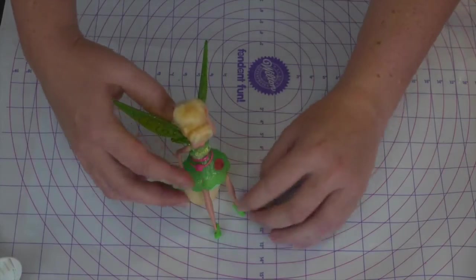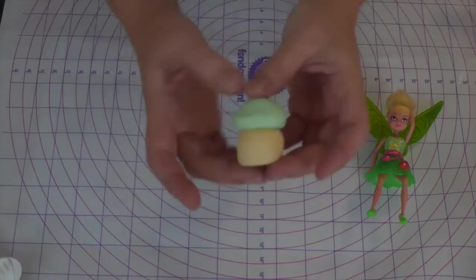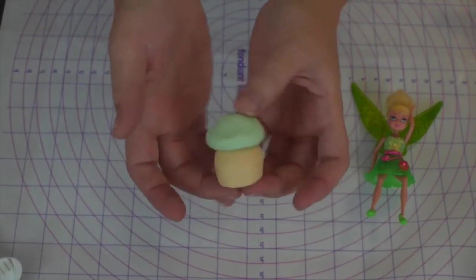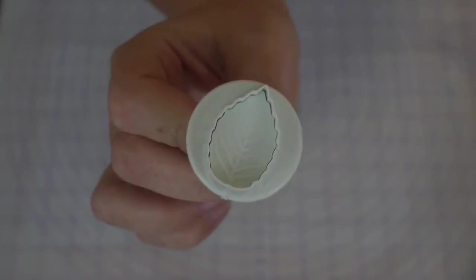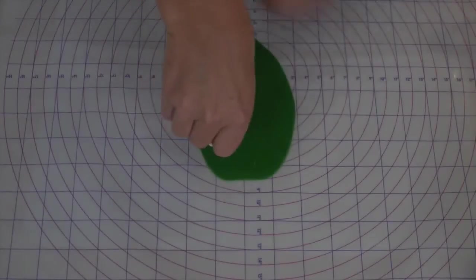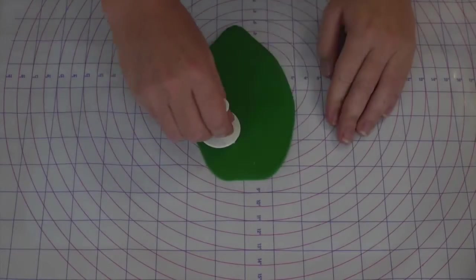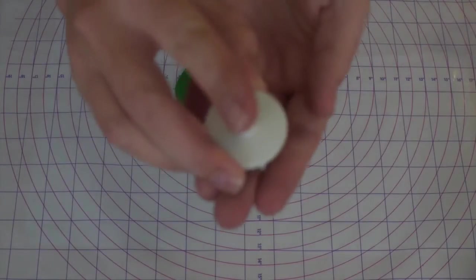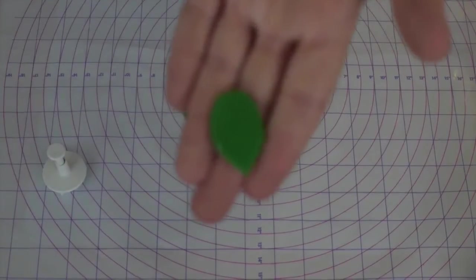You will then want to start cutting out some leaves. You are going to need lots of leaves for the top of your giant cupcake. So using our little veining plunge leaf cutter, I am going to roll out some green fondant and I am going to get pressing on some leaves.